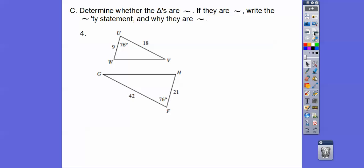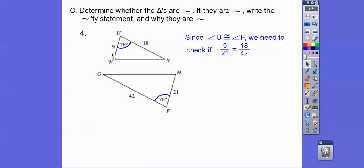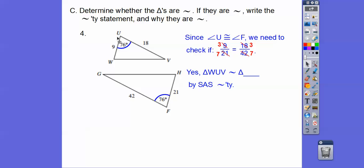How about this one? We've got those angles congruent right there, and now we need to see if these sides are in proportion — I'm doing top over bottom. Small side on top over small side on bottom equals big side on top over big side on bottom. 3 goes into that 3 times and 7 times; 6 goes into that 3 times and 7 times. They are similar by side-angle-side because the two sides are in proportion and the included angles are congruent. Going from small to angle to big: triangle WUV is similar to triangle HFG.